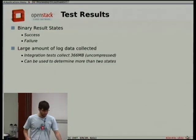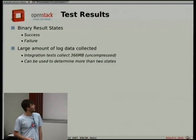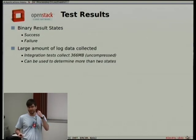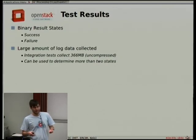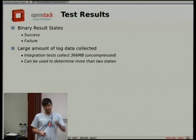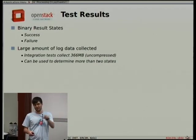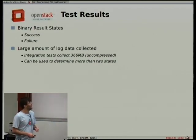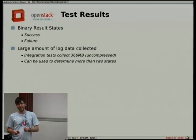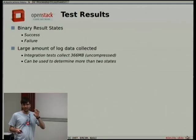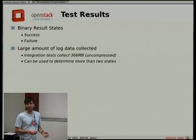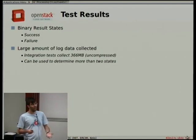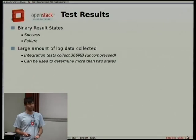Typically your test results have a binary result state: you passed or you failed. This is what Zuul reports back to the code review system — the person submitting code and the person reviewing it see which tests passed and which failed. That's good and gives you a quick view of what happened. But there's a lot of log data being generated, especially for these integration tests. Right now we're generating about 366 megabytes of uncompressed log data from every integration test.